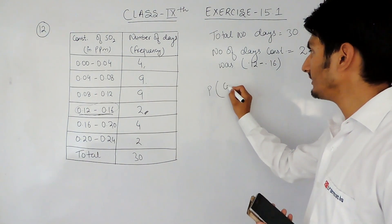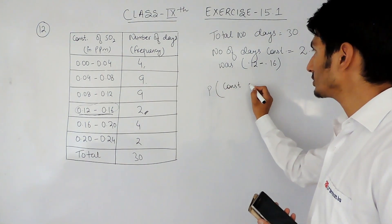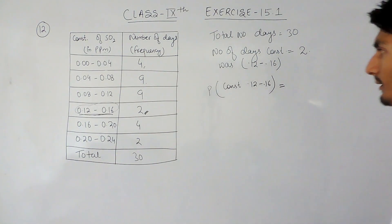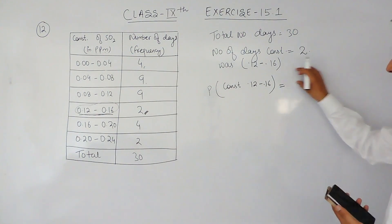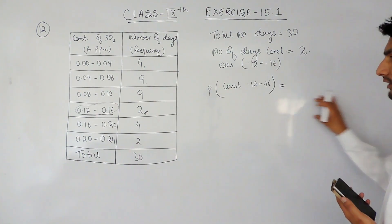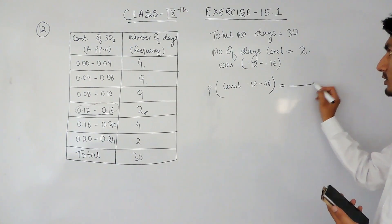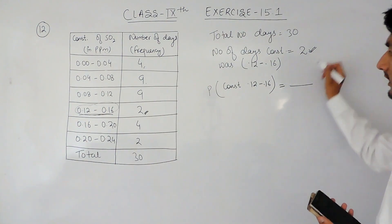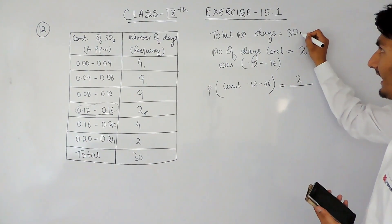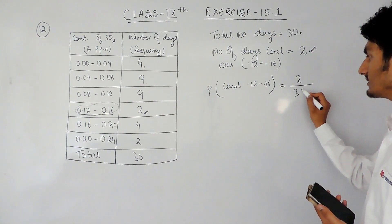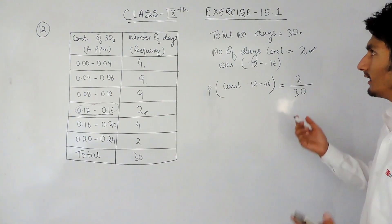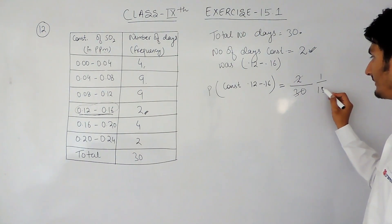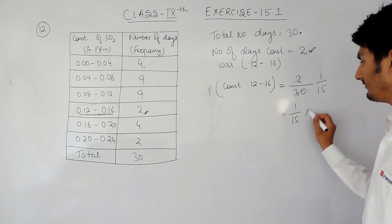Now if we have to find the probability of the event where the concentration is between 0.12 to 0.16, the probability equals the number of trials in which this event has occurred divided by the total number of trials. The number of favorable days is 2, and the total number of days is 30. Cancelling — 2 and 2, 15 and 30 — the probability is 1/15.